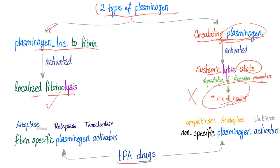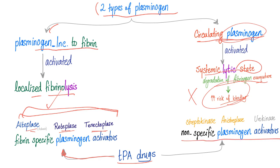Therefore, TPA drugs are divided into two groups. The superior, fibrin-specific group includes alteplase, reteplase, and tenecteplase — this group is more expensive. The non-fibrin-specific plasminogen activators include streptokinase, anistreplase, and urokinase.